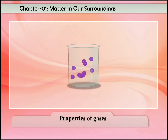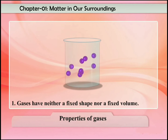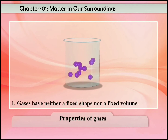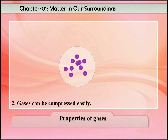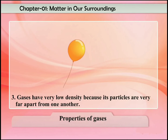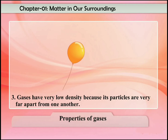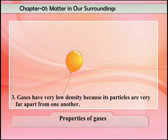One, gases have neither a fixed shape nor a fixed volume. Two, gases can be compressed easily. Three, gases have very low density because their particles are very far apart from one another.